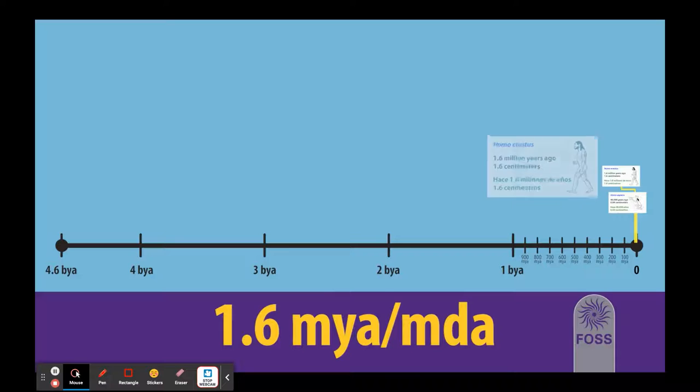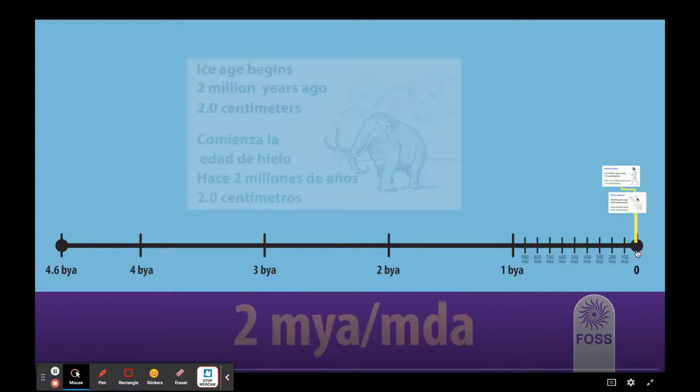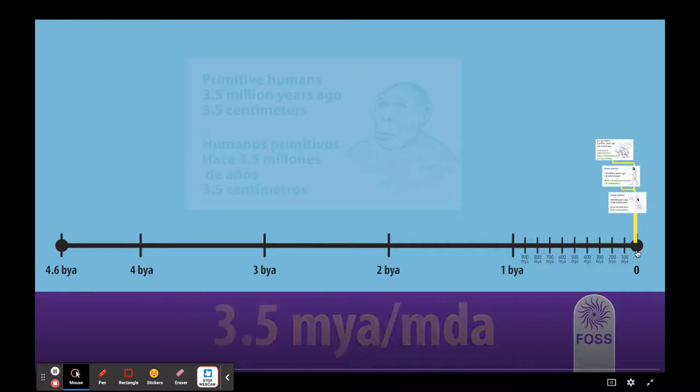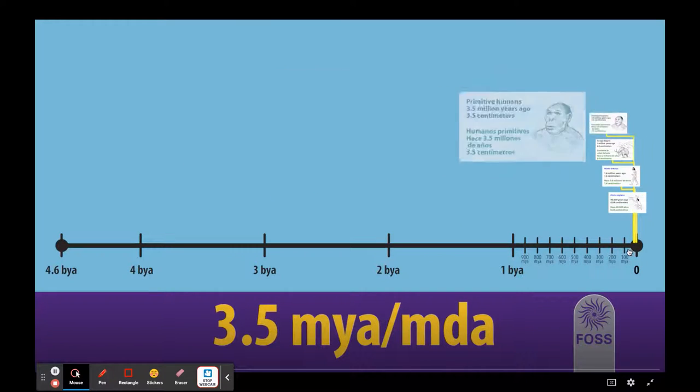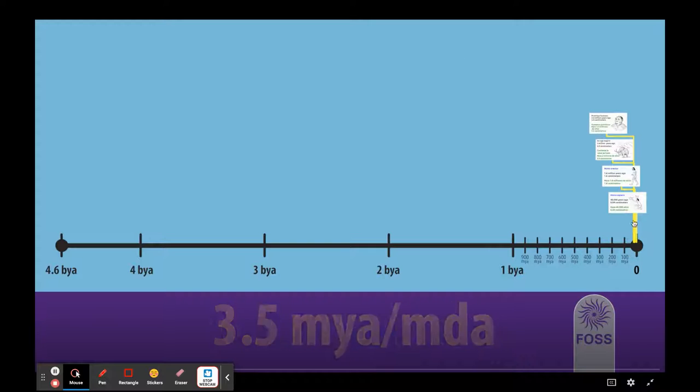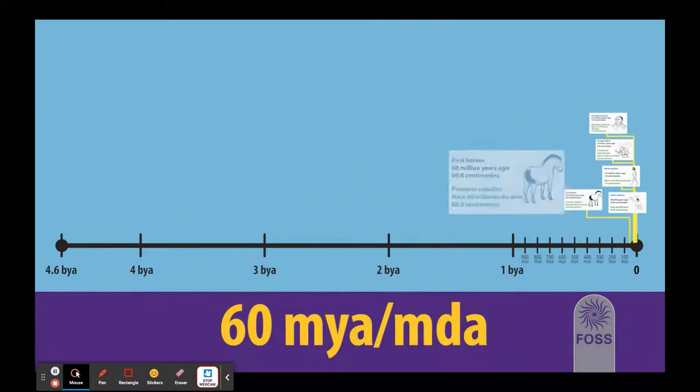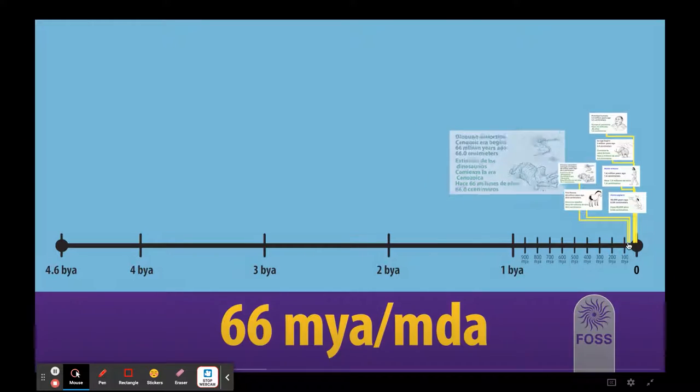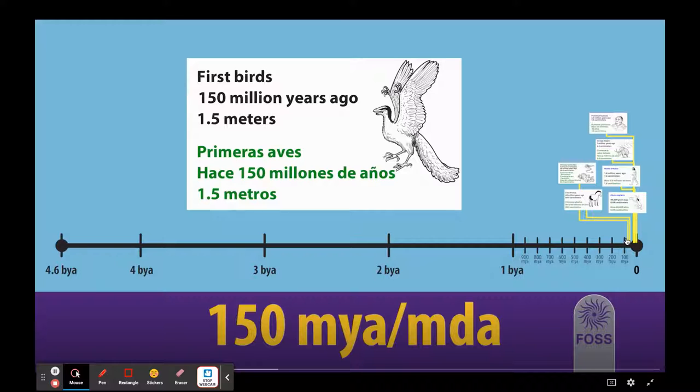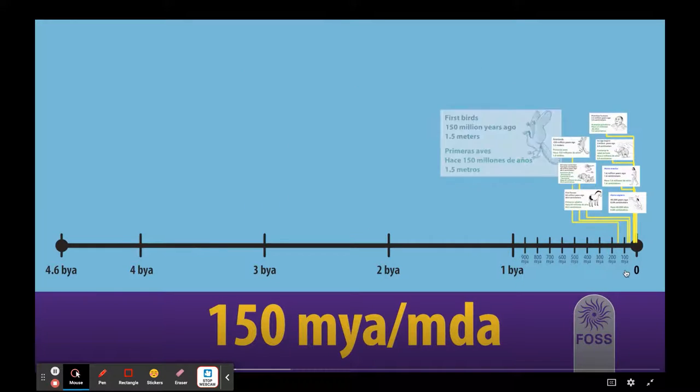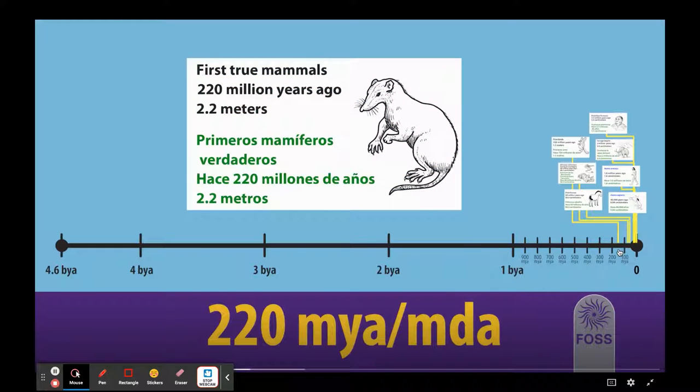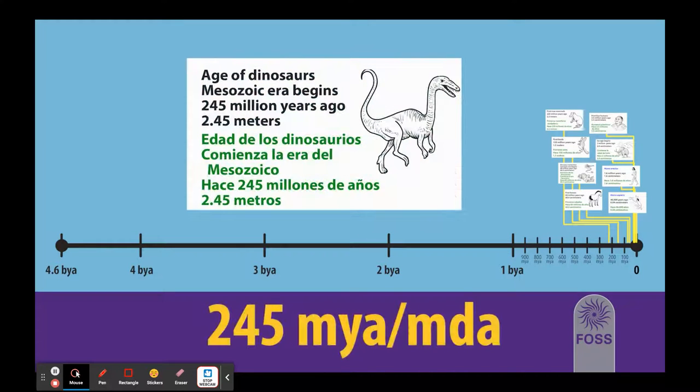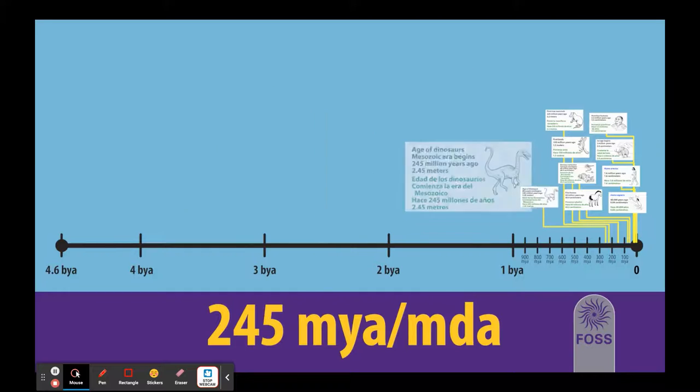Let's look at the video. So here's 4.6 billion years ago on the left and zero is today. So Homo sapiens 40,000 years ago is basically still at zero. Homo erectus 1.6. That's basically still at zero. Ice age begins 2 million years ago, basically still at zero. Primitive humans 3.5 billion years ago, basically still at zero. First horses 60 million years ago. Okay we can see that line over here. Dinosaur extinction 66 million years ago. It's not too far away from zero is it? It's pretty recent. First birds 150 million years ago. First true mammals 220. Age of dinosaurs, Mesozoic era begins 245 million years ago.